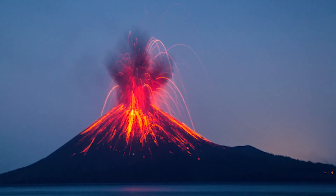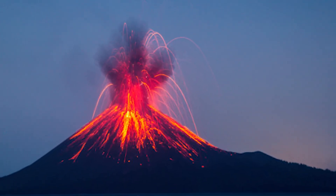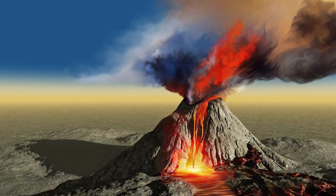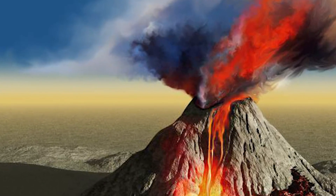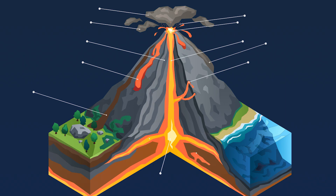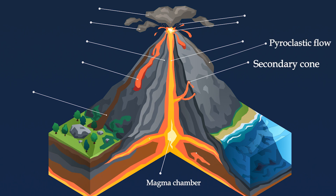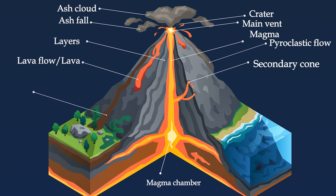Today let's talk about volcanoes and their parts. The parts of a volcano are: Magma Chamber, Secondary Cone, Pyroclastic Flow, Magma, Main Vent, Crater, Ash Cloud, Ash Fall, Layers, Lava Flow, All Lava, and Lahar.